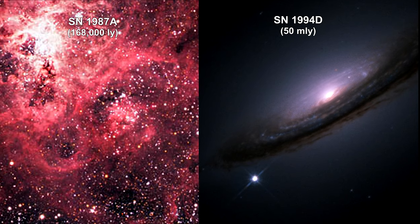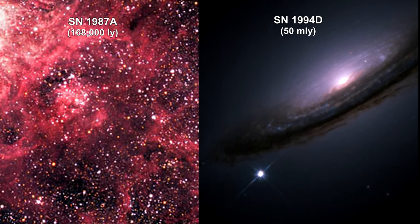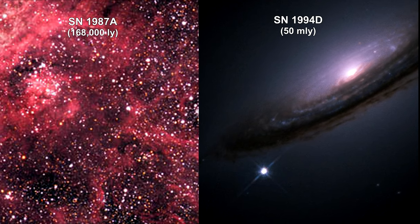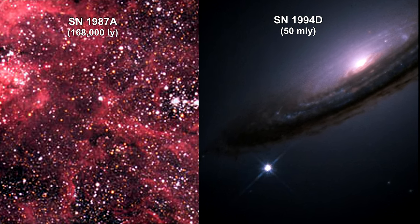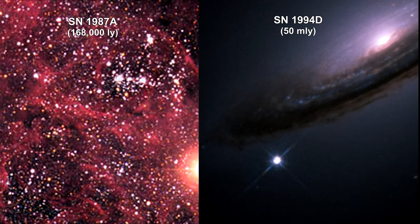After Hubble discovered the universe was expanding, it was assumed that it started off with a tremendous expansion rate, and because of the gravitational attraction of all the matter in the universe, the expansion would be slowing down.